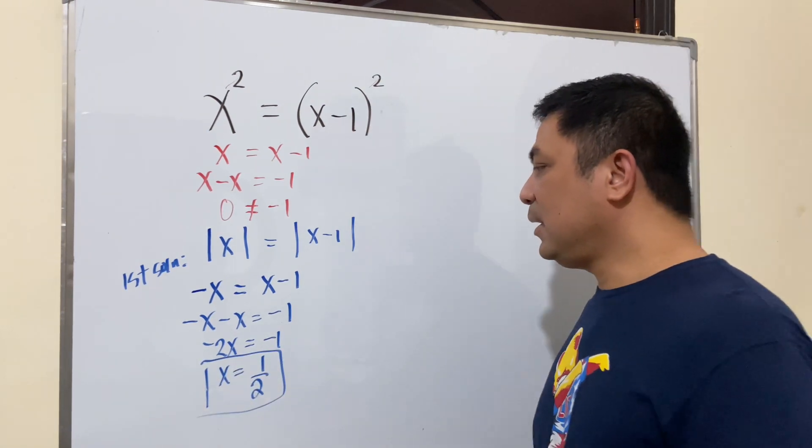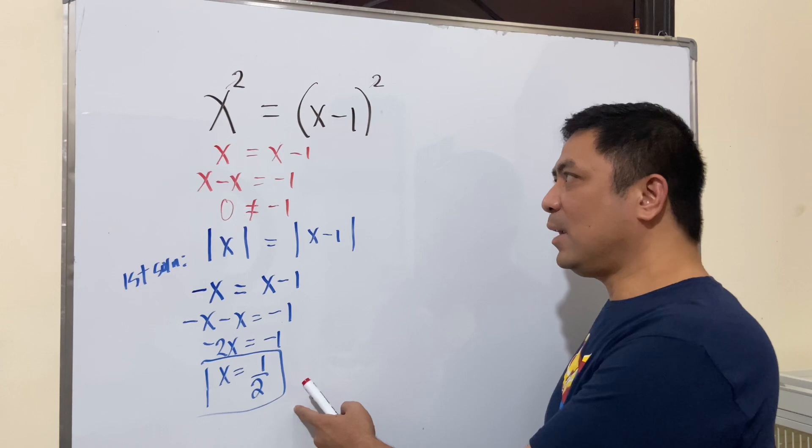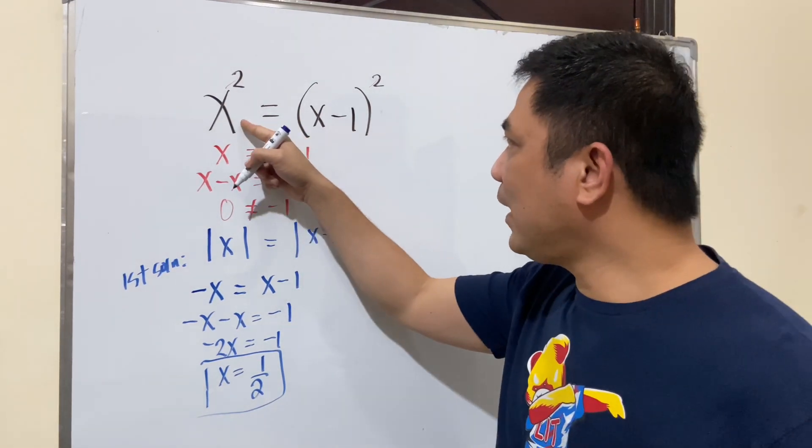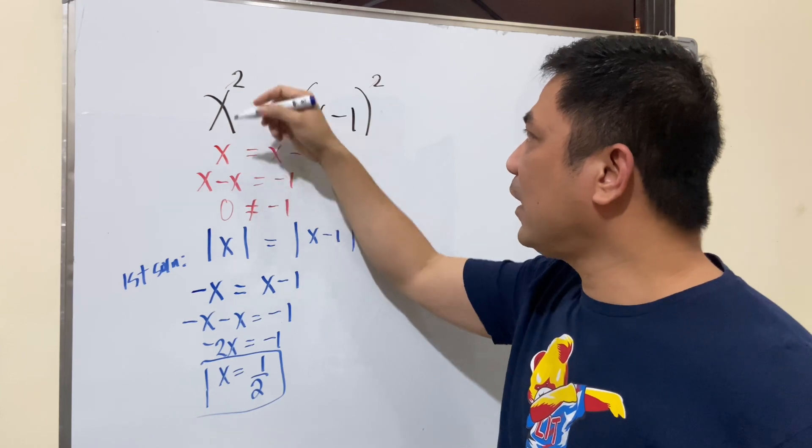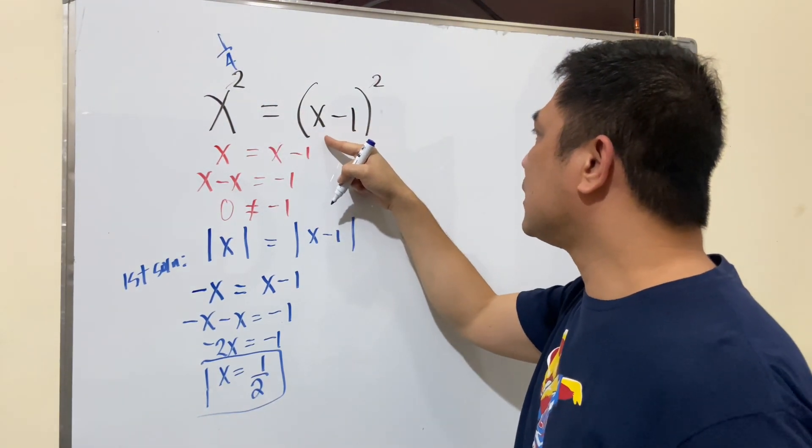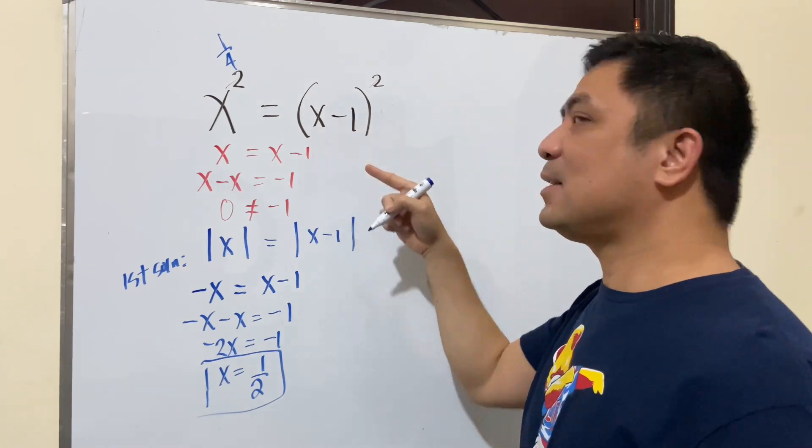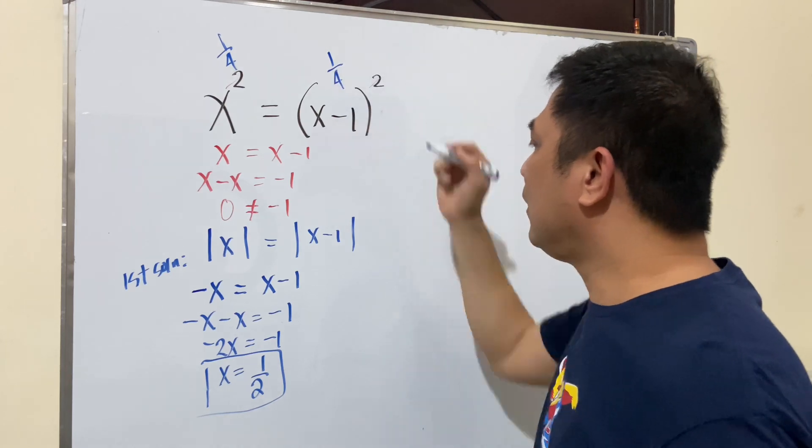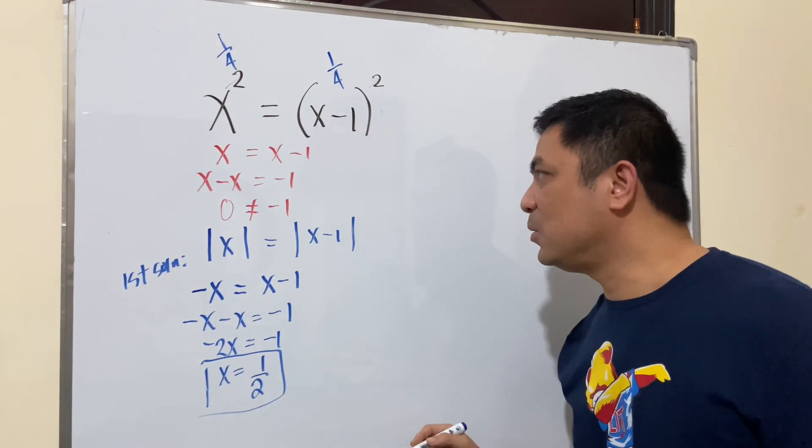Okay, so we say that x is equal to 1 half is possible value. So let's try to substitute now. 1 half times 1 half or 1 half squared is 1 over 4. And then here is 1 half minus 1. That's negative 1 half. But when you square that 1, it will give you 1 over 4. So 1 half is a solution.